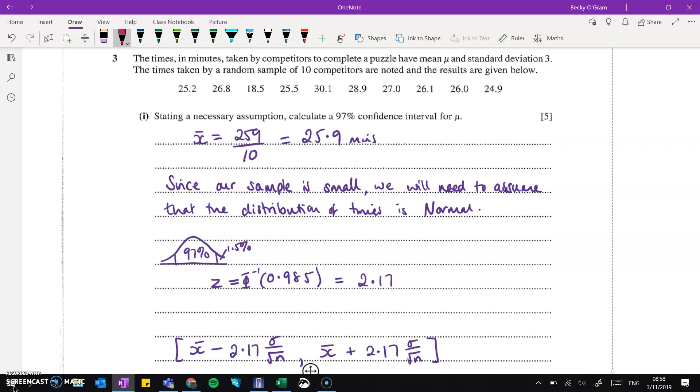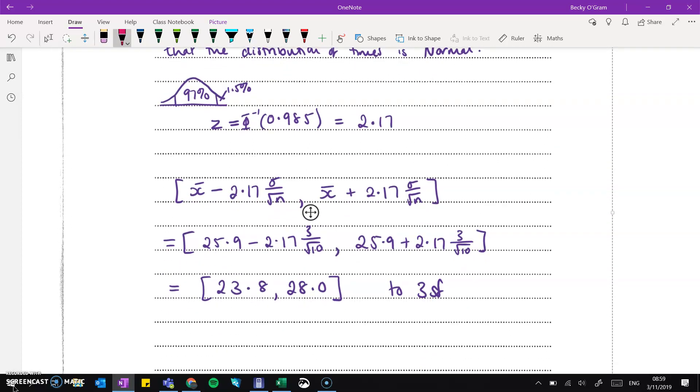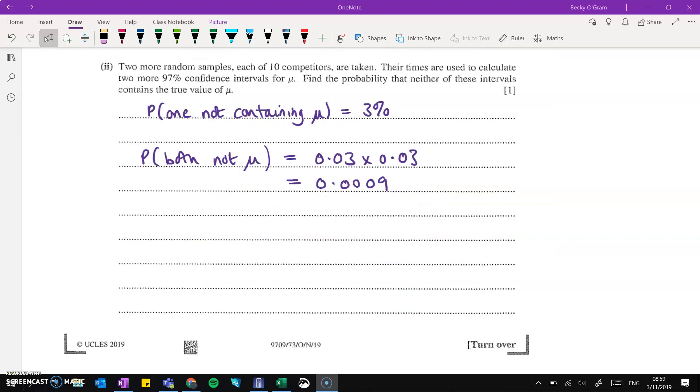Now, because our sample is small, we can't apply the central limit theorem to the distribution of means. So we will then need to assume that the distribution of our times that were taken by these competitors is normally distributed. So then we're looking for the middle 97% for our confidence interval. That gives us a tail at the top of 1.5%. So we can work out our z value to be 2.17 and then apply that to work out our confidence interval here. Just working through those numbers and we get our final confidence interval down at the bottom there.